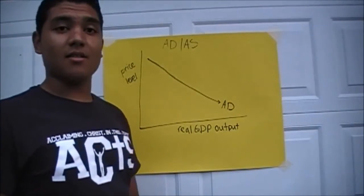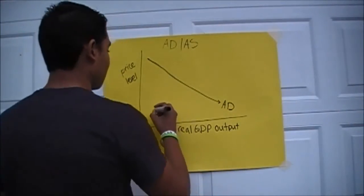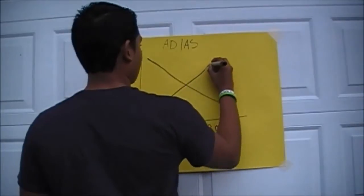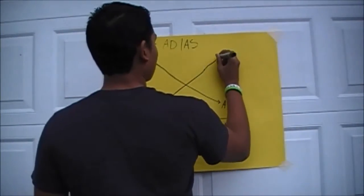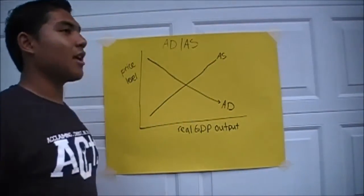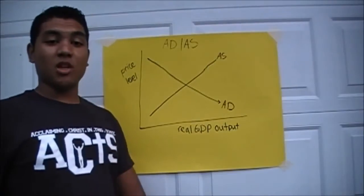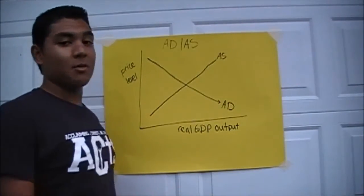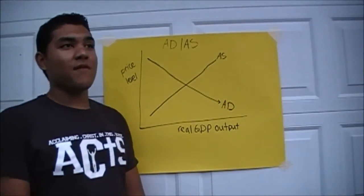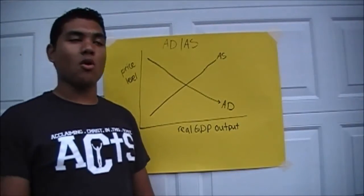And then we also have AS, which is always upward sloping. This means that when prices are low, then production is low. When prices are up, then production is up. This could be manufacturers, businesses, stores, etc.